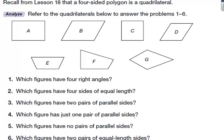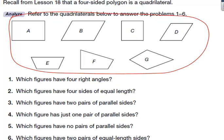Remember back to lesson 18 that a four-sided polygon is a quadrilateral. Looking at figures A through G, see if you can answer these questions. Which figures have four right angles? There are only two — see if you can find them quickly. They are A and C, because they have the right angles.